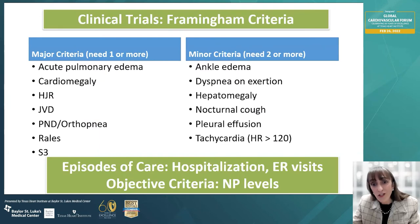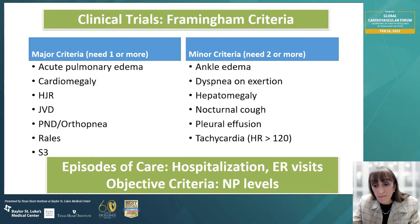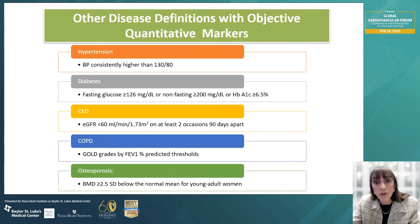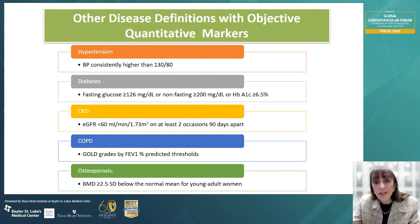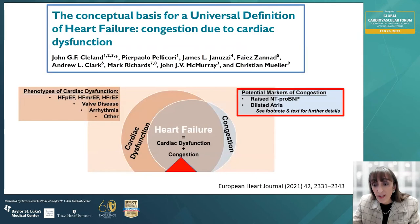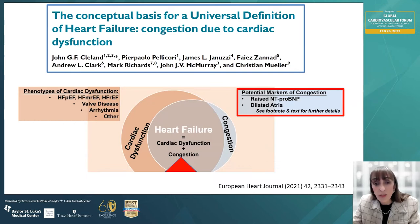If we examine research strategies in heart failure, research studies have traditionally relied on the Framingham criteria, which incorporate symptoms or signs, or objective criteria such as elevated natriuretic peptide levels or hospitalization. If we examine other disease definitions, most have evolved to incorporate objective criteria. EGFR use in chronic kidney disease definition or hemoglobin A1C use in diabetes definition have made these definitions practical and treatment targets clear with a definable threshold. There have been formulations proposing use of natriuretic peptide levels as the central diagnostic criteria, even in the absence of symptoms, very similar to cardiac troponin in the myocardial infarction definition.